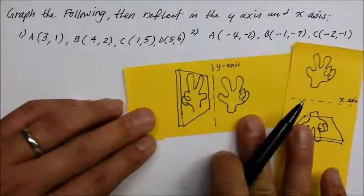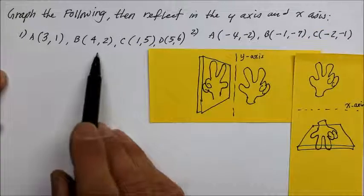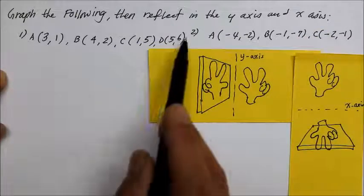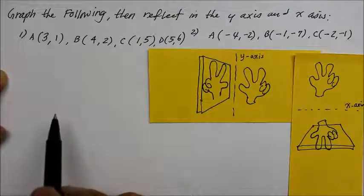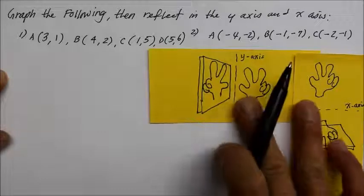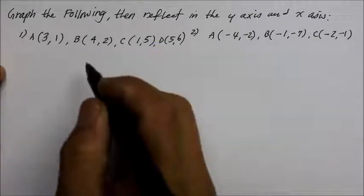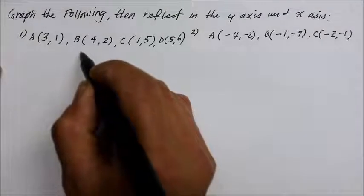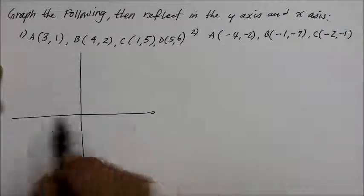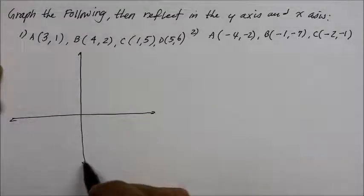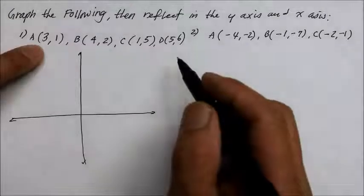So keeping that in mind, it says over here: graph these points and reflect them in the y-axis and the x-axis, both ways. Let me demonstrate number one so you can try number two on your own. We need a coordinate plane, and we're going to plot these four points. Since there are four points, we'll have four different vertices — it's going to be a quadrilateral.